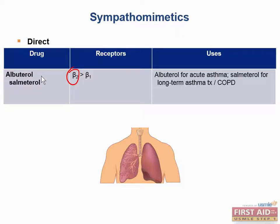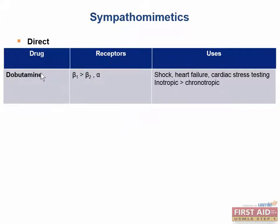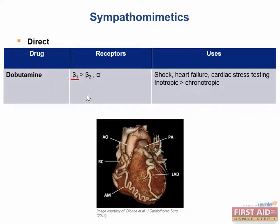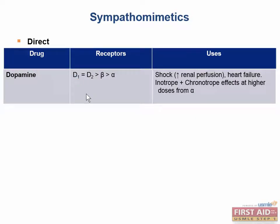Albuterol has a shorter half-life and is used for more acute asthma attacks, while salmeterol is used for long-term treatment. Dobutamine primarily stimulates beta-1 receptors and is therefore inotropic; it can be used in the treatment of heart failure or for cardiac stress testing. Dopamine primarily stimulates the D1 and D2 receptors equally at lower doses, beta receptors at medium doses, and alpha receptors at large doses, making it both inotropic and chronotropic. Dopamine can be used in the treatment of shock and heart failure.